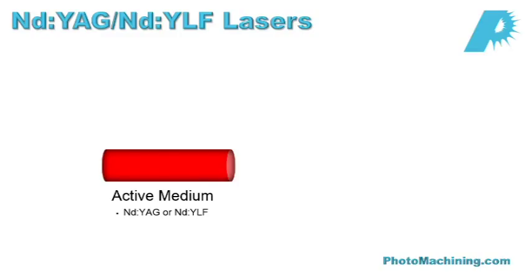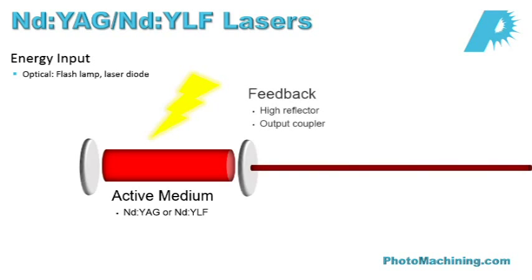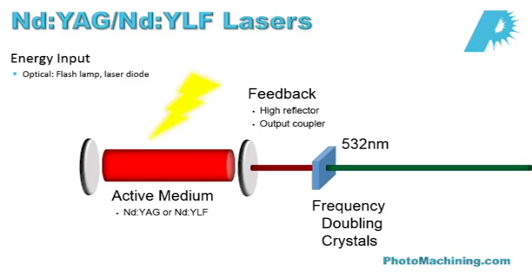Another great feature of neodymium YAG lasers is that you can focus the fundamental output into a frequency-doubling crystal to get a different wavelength. For instance, starting with one-micron radiation and frequency doubling it gives you 532 nanometers — right in the green portion of the visible spectrum. Frequency tripling gives you 355 nanometers, which is in the UV; quadrupling gives you 266 nanometers, also in the UV. This is the basic principle behind ultraviolet DPSS lasers.